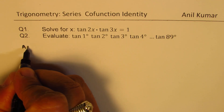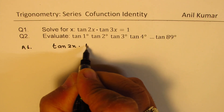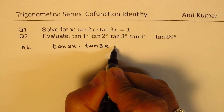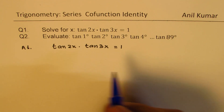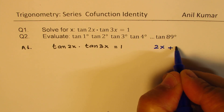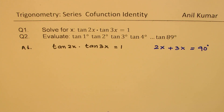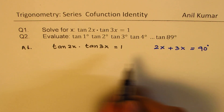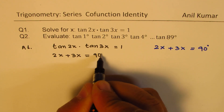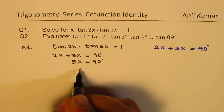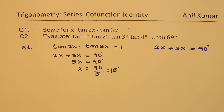Let's try to answer question number one first. We have tan 2x times tan 3x equals to 1. Whenever you have this kind of situation, it is only possible if 2x plus 3x is equal to 90 degrees. So knowing this, we can straight away write down our answer. We know 2x plus 3x is equal to 90 degrees, so 5x equals to 90 degrees, or x is equal to 90 divided by 5, and that gives us 18 degrees as our solution.